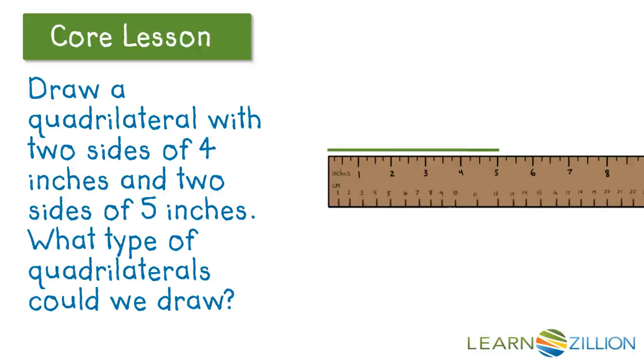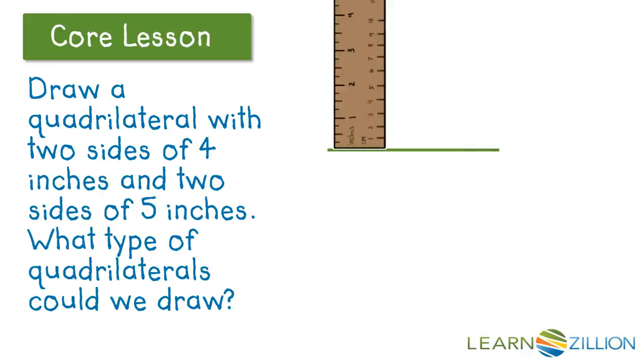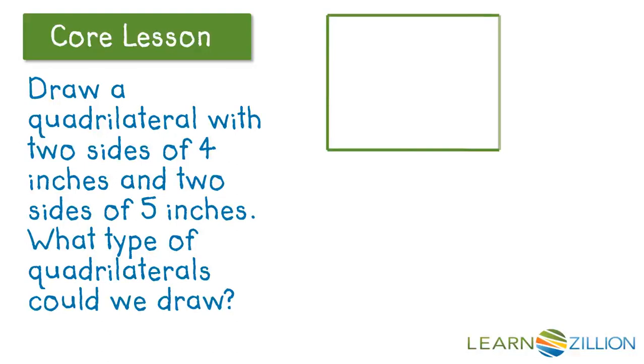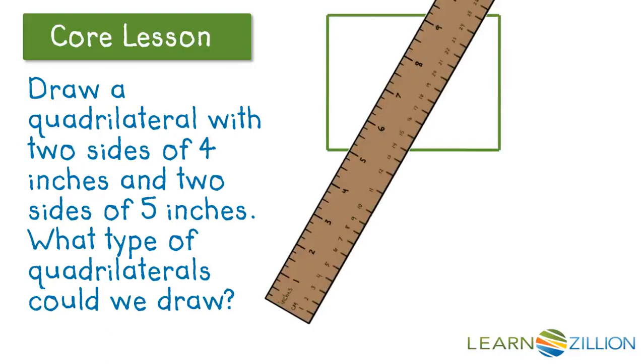And of course, if we do that, our opposite side also needs to be 5 inches, and that means that our other sides will be 4 inches. So let's add another side to it, and we'll go 4 inches. And then of course, our opposite sides will be parallel and congruent, so we end up with a rectangle.